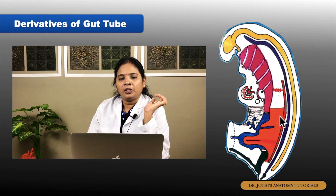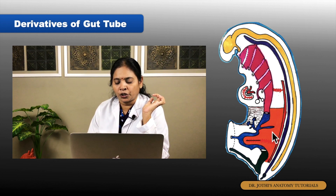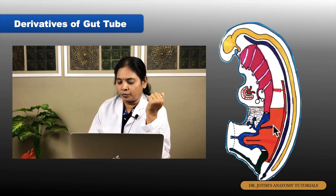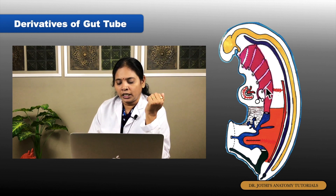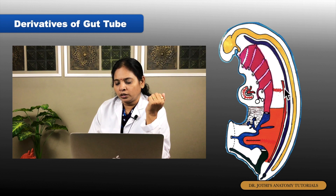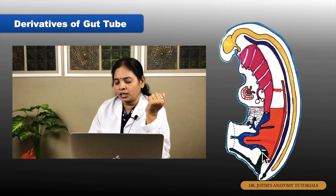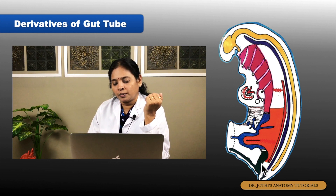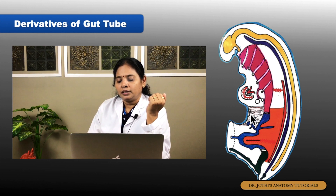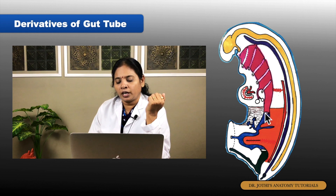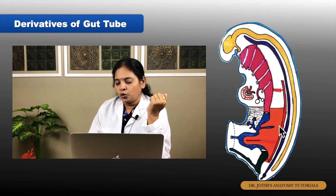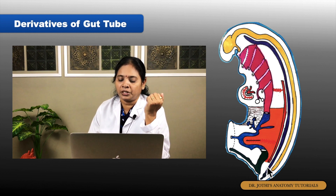The entire gut tube has a defined blood supply: the foregut is supplied by the celiac artery, the midgut by the superior mesenteric artery, and the hindgut by the inferior mesenteric artery. The gut tube is suspended from the anterior abdominal wall only in the foregut region through the ventral mesentery, and to the posterior abdominal wall from the stomach to the sigmoid colon through the dorsal mesentery.